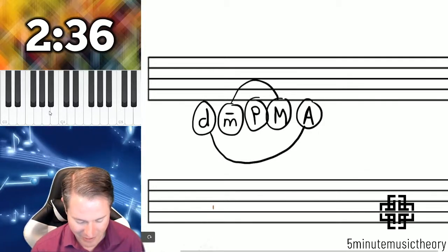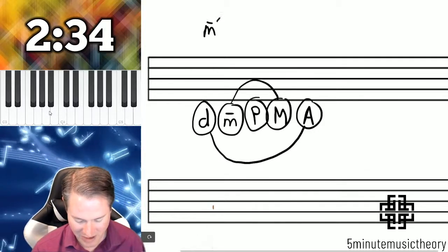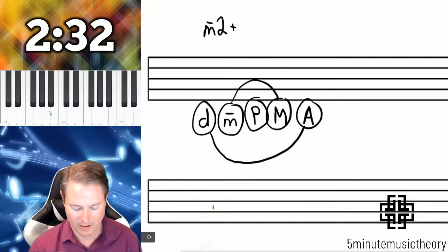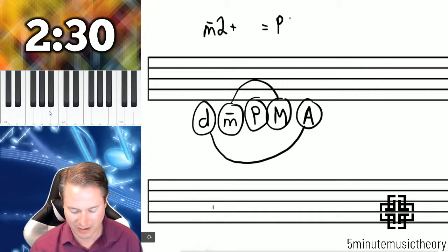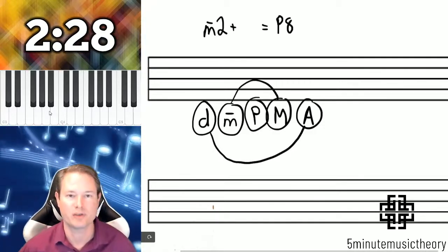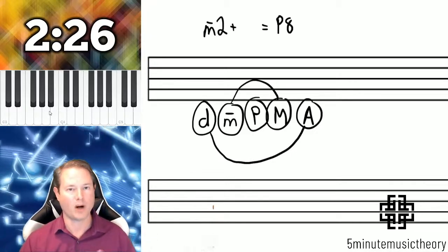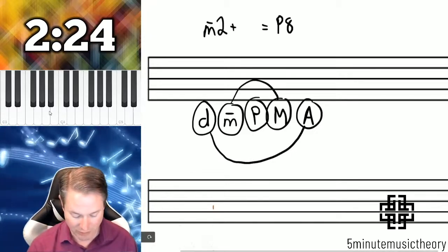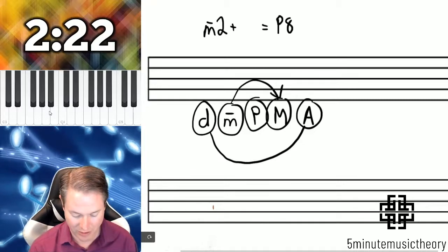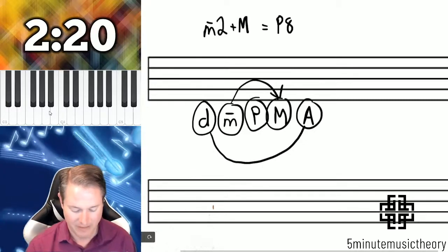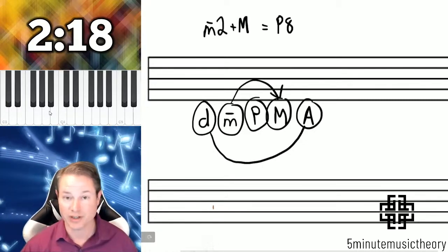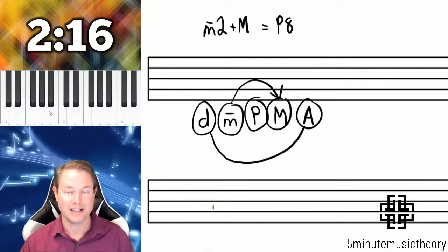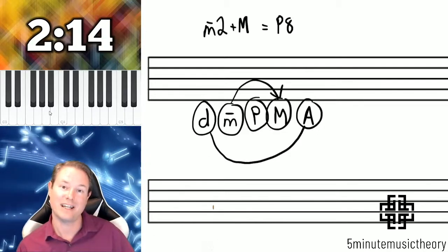So if we take a minor second, for example. So we want to figure out what is the complementary interval to a minor second. The opposite quality of minor is major. So minor to major is the opposite quality. So minor second to a major something, and then two plus the next interval need to equal nine, or you could just do nine minus two.